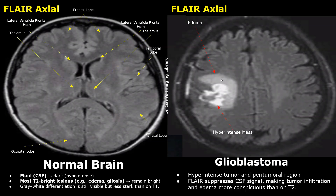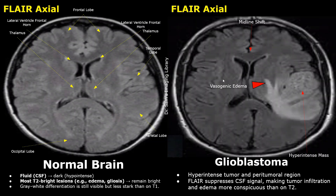Here is another case of a glioblastoma. In this FLAIR image, the mass is hyper-intense and vasogenic edema is also hyper-intense but has a smoother, homogeneous appearance.